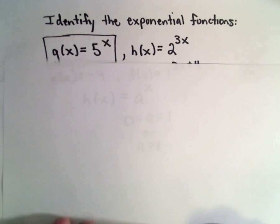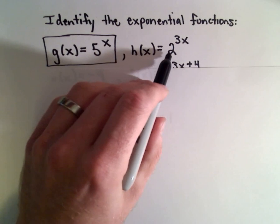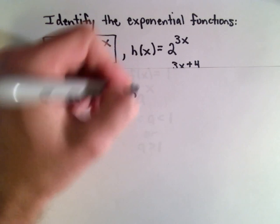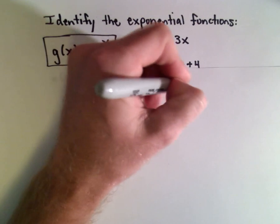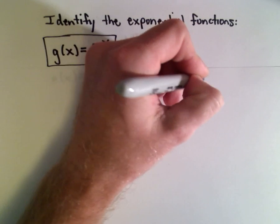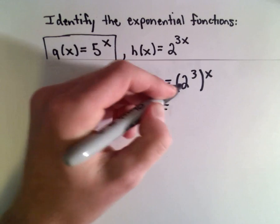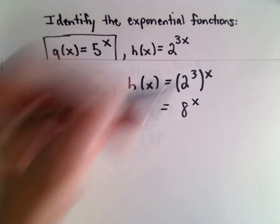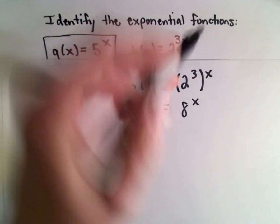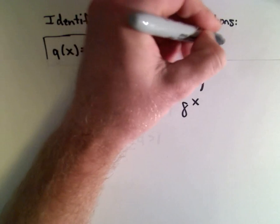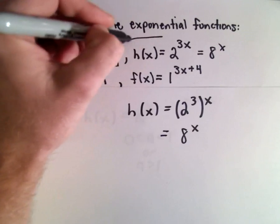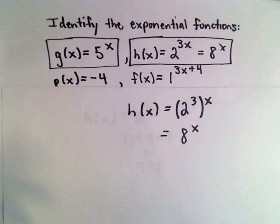Notice we have this next one, h(x) equals 2 raised to the power of 3x. We could write that as 2 cubed raised to the power of x. That still gives us the exact same thing. 2 to the third power is 8. So really this function is the same thing as 8 raised to the power of x. So that one is also an exponential function.